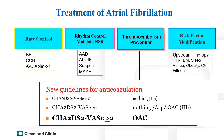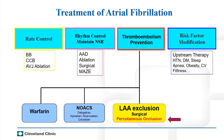Whenever we treat atrial fibrillation, four things come to mind: rate control, rhythm control strategies including antiarrhythmic medication or ablation, stroke prevention strategies, and newer guidelines calling for oral anticoagulation for patients with a CHADS-VASc score of two or more. The strategies available for stroke prevention are traditional warfarin, the newer oral anticoagulants — which by most recent guidelines are favored over warfarin — and now, more recently, left atrial appendage exclusion, either surgical or percutaneous.